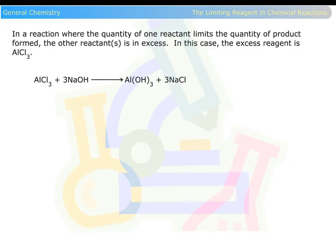In a reaction where the quantity of one reactant limits the quantity of product formed, the other reactant is in excess. In this case, the excess reagent is aluminum chloride. Watch below as the equation is filled out.